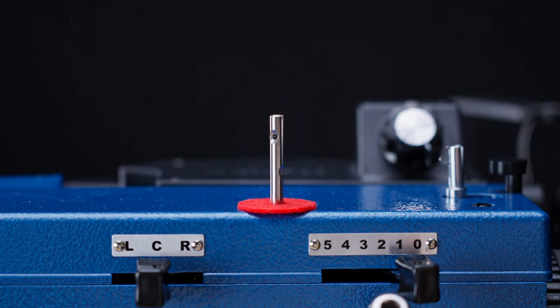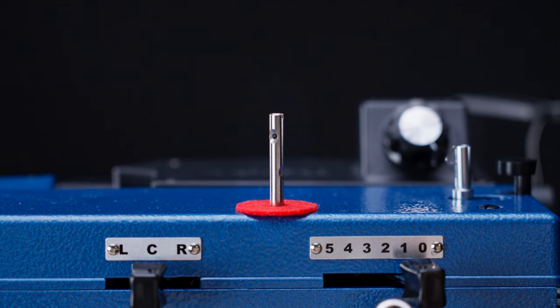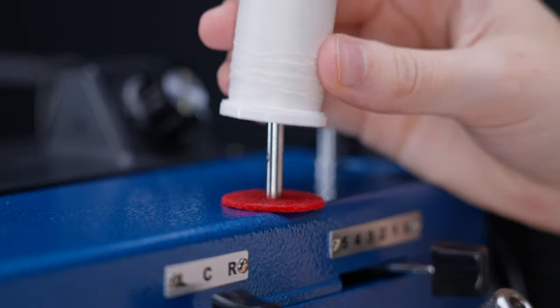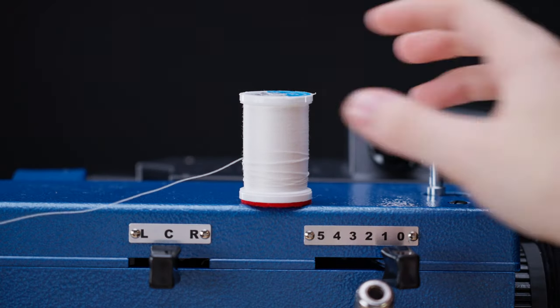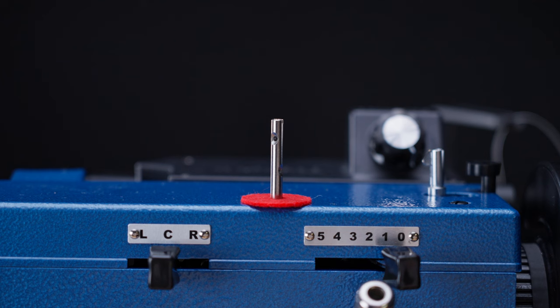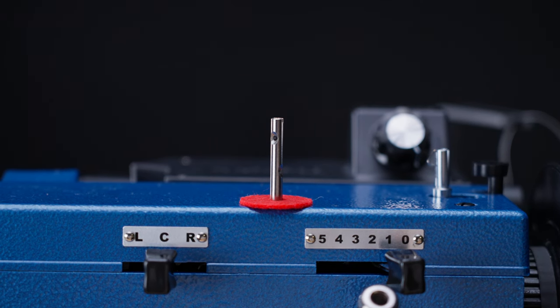If you're sewing with a thread spool, this thread post is where you will place your spool. Place the thread spool onto the post so that the thread spins off the spool in a clockwise direction. Otherwise, there's a risk of unscrewing the thread post if the thread spins counterclockwise.